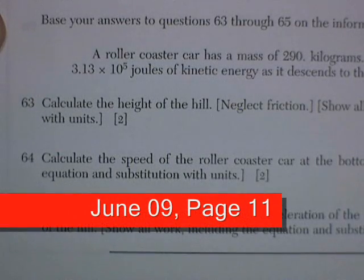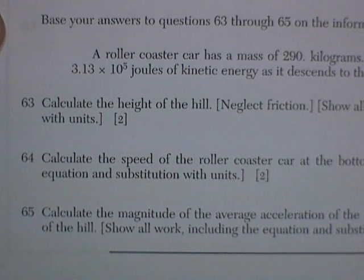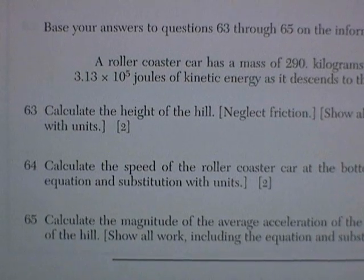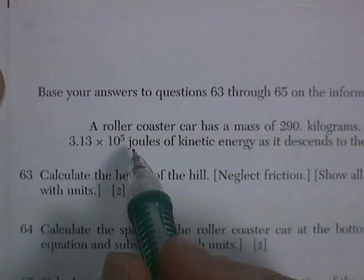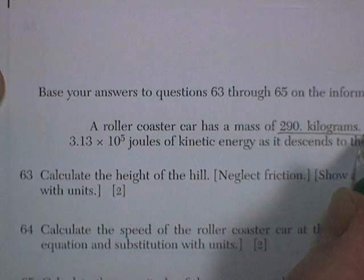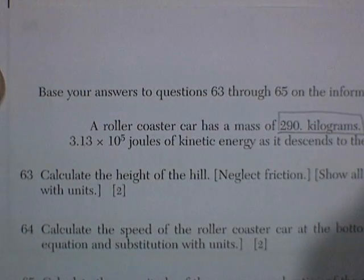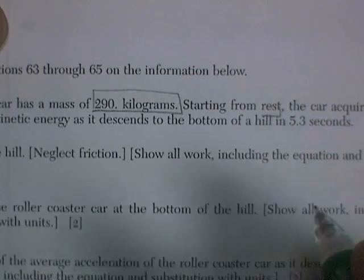All right, we're here. We're still in the June 2009 exam. We're on page 11. Let's see how far we can go. Question 83, 84, and 85 deal with a roller coaster that has a mass of 290 kilograms. It starts from rest. Initial velocity is zero. So we've got that.